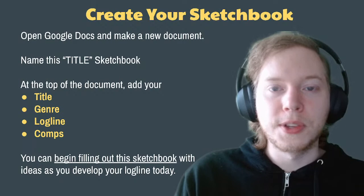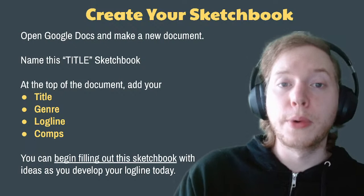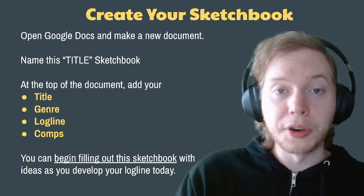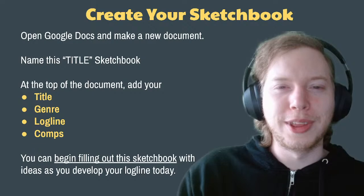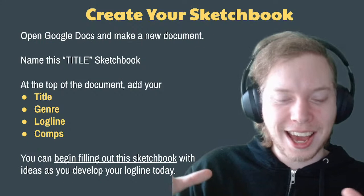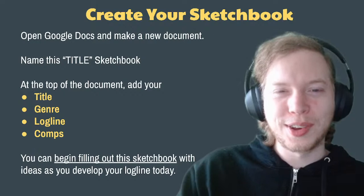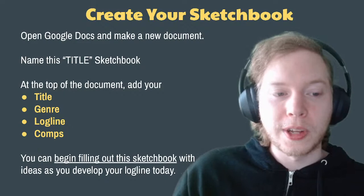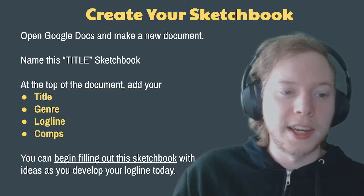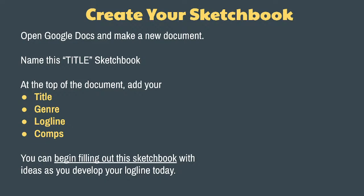Think of comps as: the world of the first film but with the style and tone of the second. For example, 'Lord of the Rings meets True Detective' equals a detective story set in a fantasy world. The first comp might be the setting or arena, the second might be the approach. If your comps are all comedies but your log line doesn't sound funny, that signals something is off. Try to narrow it down to two main comps, but you can include a short list of runner-ups. Something like 'Die Hard meets Trading Places' — that's a cop who trades lives with a criminal — could be interesting.